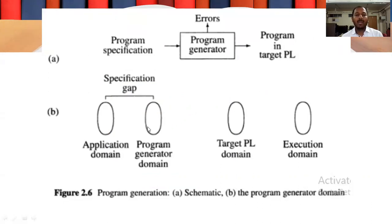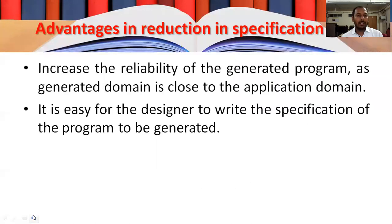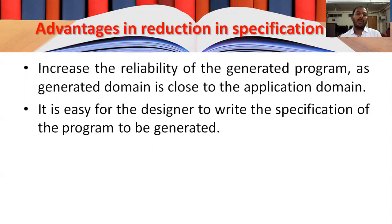Let us see how the program generator domain solves the password problem we saw earlier, where the designer gave the password as a complex password and in the execution domain the coders took a different meaning, causing consequences of semantic gap. The next slide tells us the advantages of reduction in specification gap. Because of this reduction, it increases the reliability of the generated program as the generated domain is very close to the application.